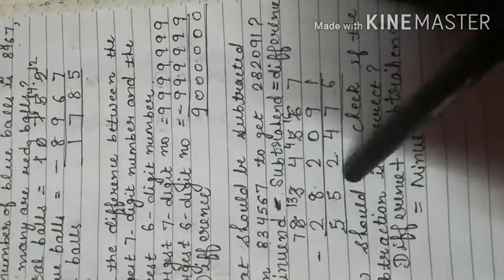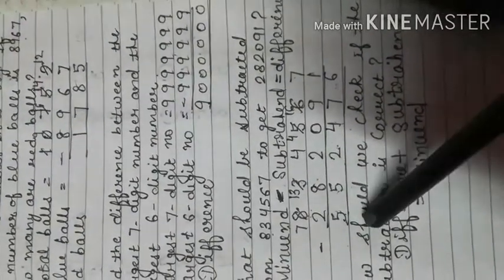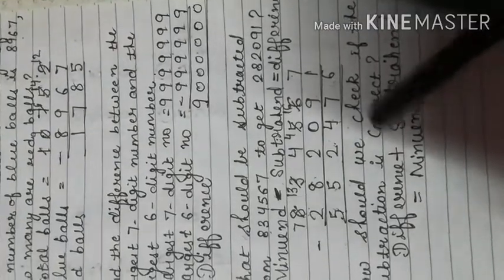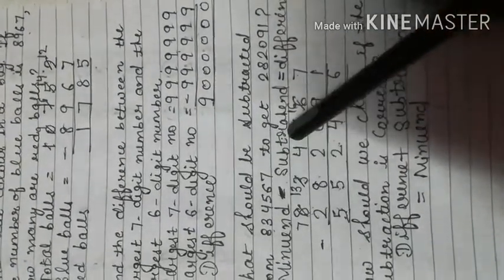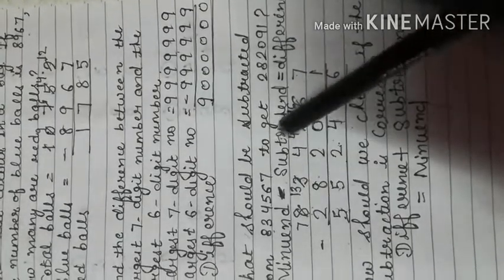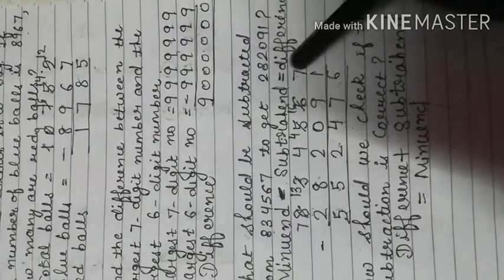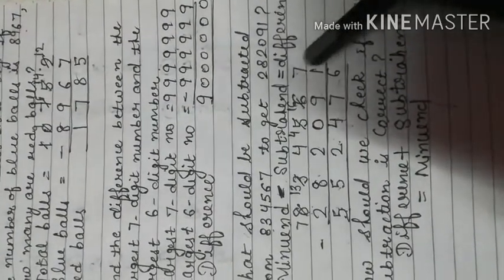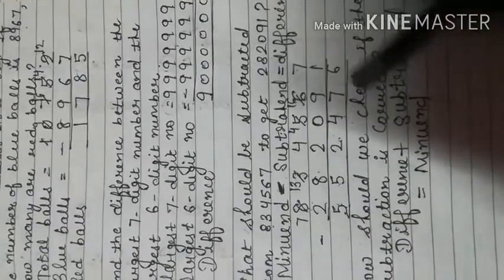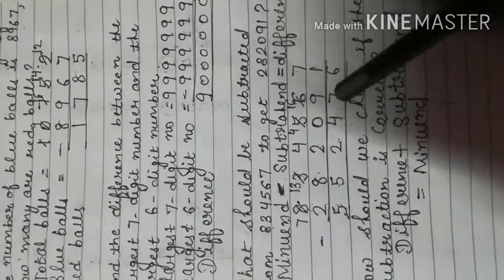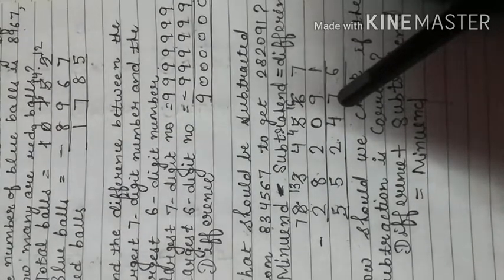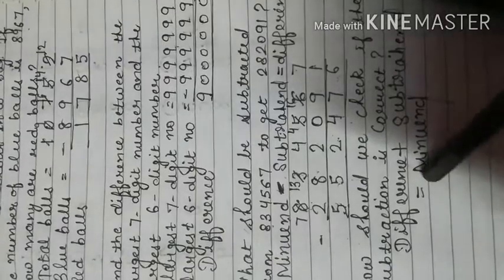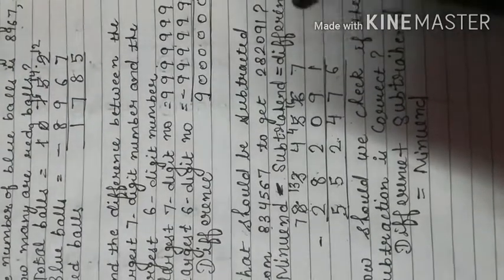If difference plus subtrahend equals minuend, your subtraction is verified. To clarify the terms: minuend is the number from which we subtract; subtrahend is the number being subtracted; and the answer of subtraction is the difference. The only way to check subtraction is through addition — add the subtrahend and the difference to get the minuend.